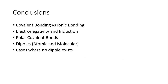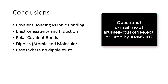In conclusion: covalent bonding involves orbital overlap while ionic bonding does not. Electronegativity differences cause induction and polarization, leading to polar covalent bonds. Polar bonds create individual atomic dipoles that can sum to give net molecular dipoles. We also covered cases where no dipole exists. If you have any questions, you can reach out using the contact information on screen.